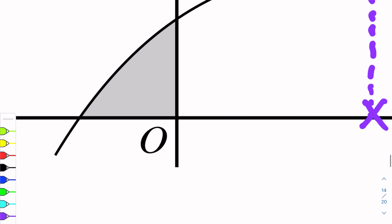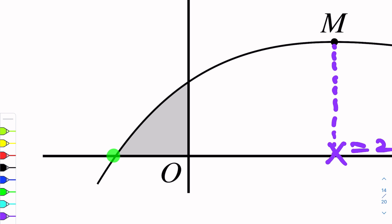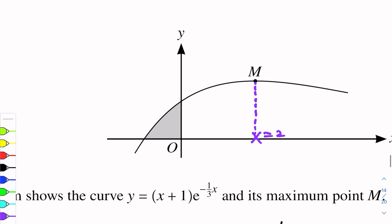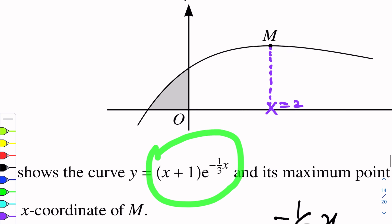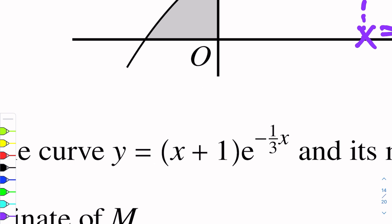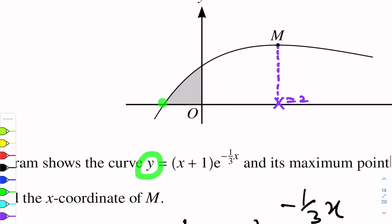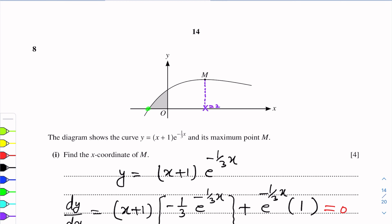The limits will be along the x-axis at two points. One point has x = 0. For the other point, we need to find its x-coordinate. This point lies on the curve and also on the x-axis, so y = 0 there. We put y = 0 in the curve equation to find x.